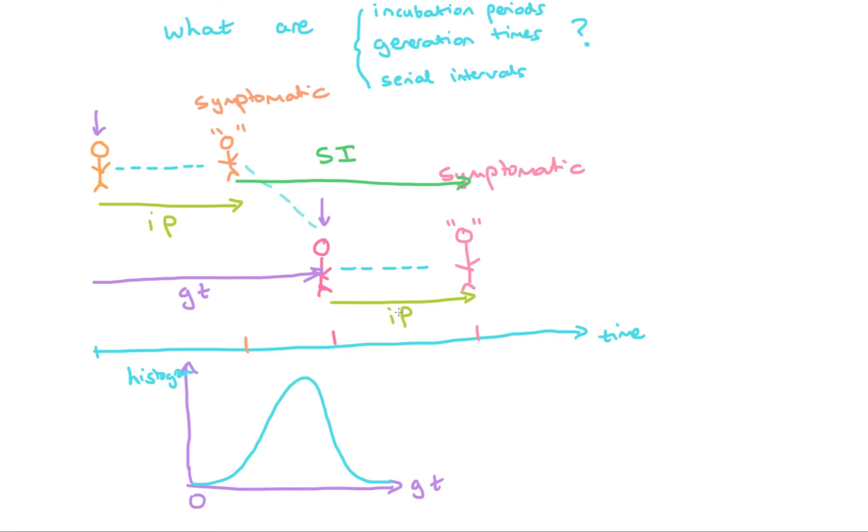Typically, the serial interval is easier to estimate than a generation time, because if symptoms appear, it's easier to recall the time when an individual became symptomatic. But we frequently may not know the time when an individual actually was infected.